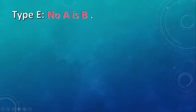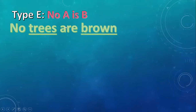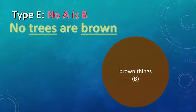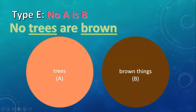Another type is type E. No A is B. For example, no trees are brown — that's probably a terrible example because there are brown trees. But what would that look like? We take all the brown things and put them in this circle. None of the trees are in this brown-things circle. So we can draw a circle around all the trees and say these two circles never the twain shall meet.